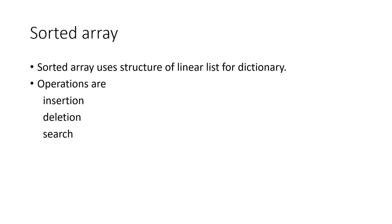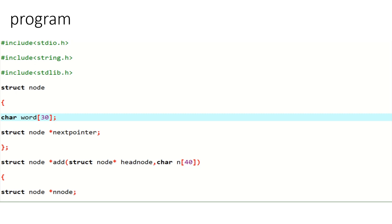Hello everyone. In this video I'm going to explain about sorted array, which is used to represent the dictionary. Sorted array uses a structure of linear list for dictionary, and the operations are insertion, deletion, and search. This is the program for implementation of dictionary operations. The header files are included at the top.